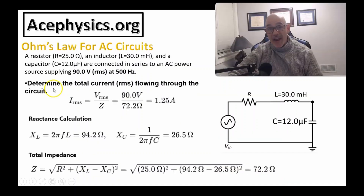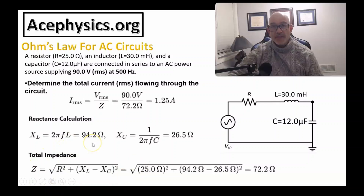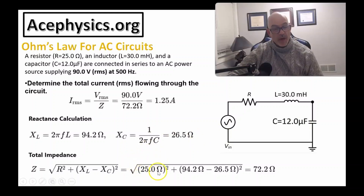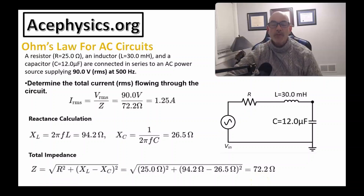For Part A, from Ohm's law, I = V/Z. The V_RMS is 90 volts. The total impedance for this series RLC circuit is the square root of R² plus (X_L minus X_C)², where R = 25 ohms. X_L = 2·pi·f·L = 94.2 ohms, and X_C = 1/(2·pi·f·C) = 26.5 ohms for the 12-microfarad capacitor. The total impedance is the square root of (25² + (94.2 − 26.5)²), which gives 72.2 ohms.